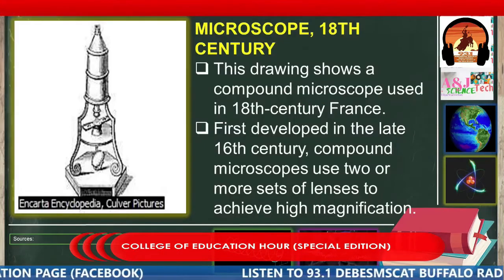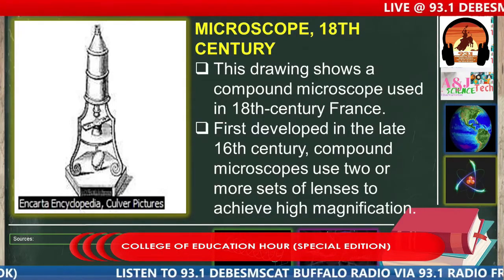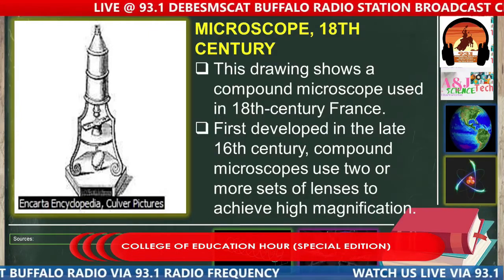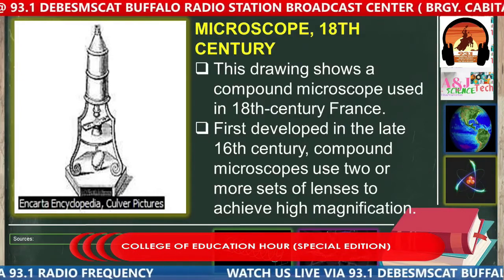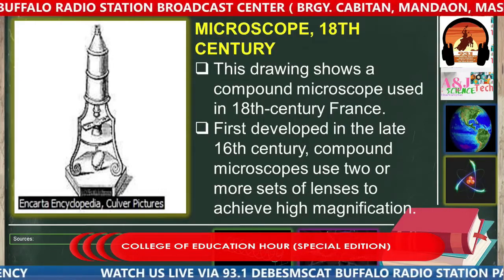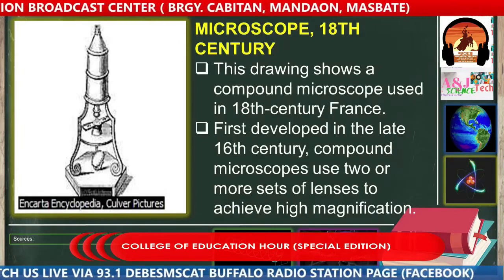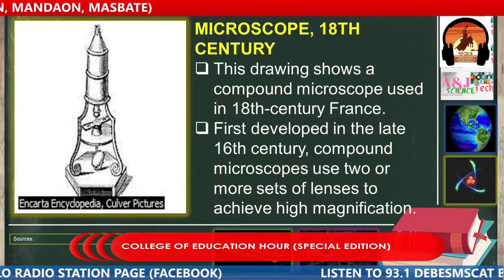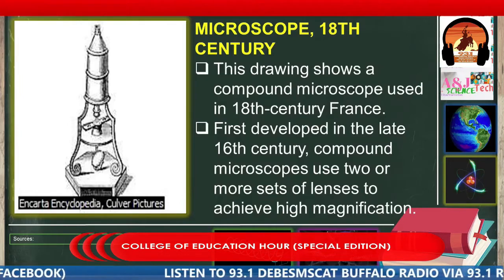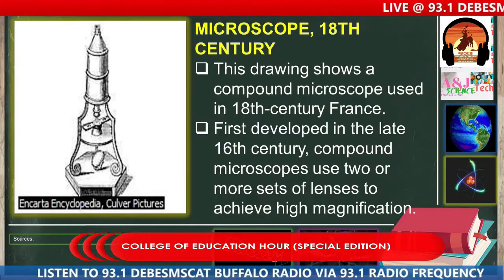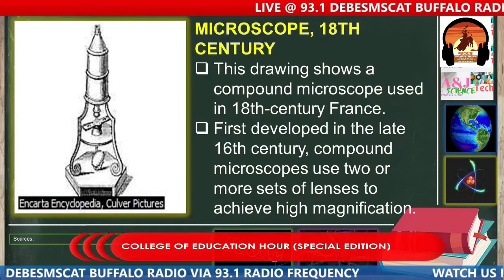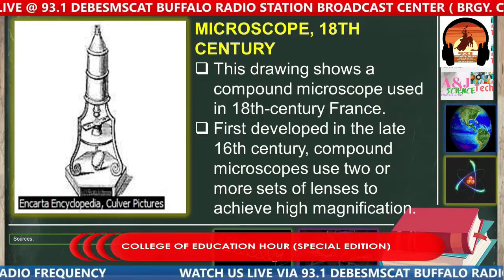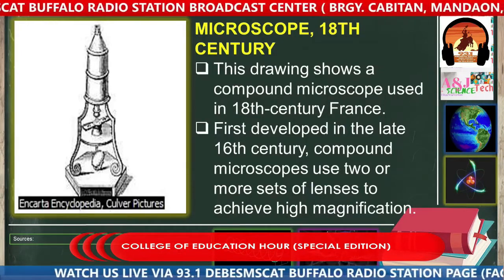Next is the microscope. What you can see here is a drawing showing the compound microscope used in 18th century France. It was first developed in the late 16th century. A compound microscope uses two or more sets of lenses to achieve high magnification. Before, in order to magnify a specimen, they used different sets of lenses. Compared to today, there are now highly equipped microscopes — electronic scanning microscopes and electron microscopes — which are highly technical, unlike before when lenses had to be changed multiple times to achieve the desired magnification.